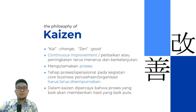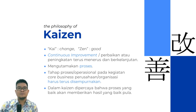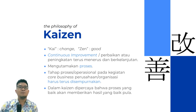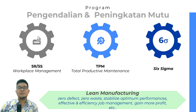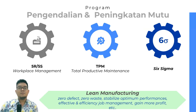Tahap proses ataupun operasional pada kegiatan core bisnis dari perusahaan atau organisasi itu perlu terus disempurnakan dan tidak boleh berhenti di satu titik saja. Dalam Kaizen dipercaya bahwa proses yang baik akan menghasilkan hasil yang baik pula. Dengan Kaizen ini kita harus berpikir bahwa kita harus selalu berada di titik yang lebih baik dengan menerapkan perbaikan secara terus-menerus dan berkelanjutan. Dengan mempelajari Kaizen, maka ini dapat diterapkan sebagai ruh untuk melakukan pengendalian dan peningkatan mutu di suatu industri.